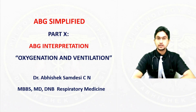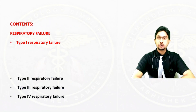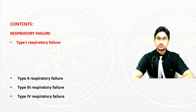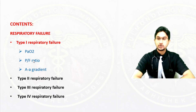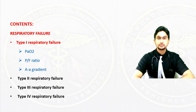Let us have a look at the contents we will be discussing. We will discuss regarding respiratory failure. There are four types of respiratory failure: Type 1, Type 2, Type 3, and Type 4. In Type 1 respiratory failure, we shall discuss regarding the PaO2, P/F ratio, and AA gradient — all of which give us an idea regarding the oxygenation status of the patient.